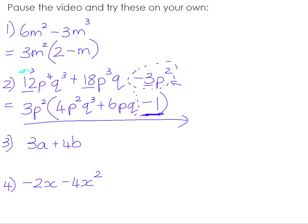For Question 3, 3a plus 4b has no common variable — only an a in one term and a b in the other — and no number divides exactly into both 3 and 4. So that expression is prime. For Question 4, because both terms are negative, we take out a negative as part of the common factor. 2 goes into both 2 and 4, and the highest power of x common to both terms is x. So negative 2x times 1 gives negative 2x, and negative 2x times positive 2x gives negative 4x squared.